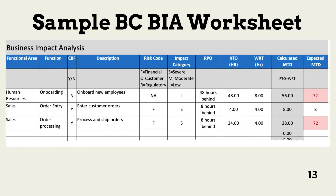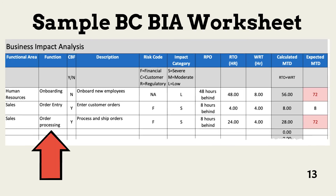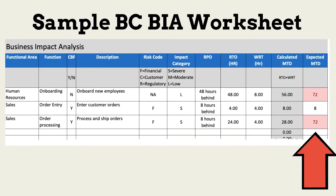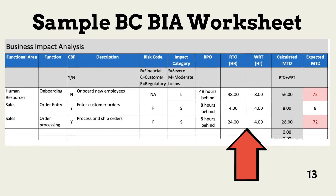This is a worksheet you can use to conduct a qualitative BIA. Working with affected managers, the team identifies business functions, determines criticality, and calculates an expected MTD for each function. The team enters the RTO and WRT required with current recovery capabilities.